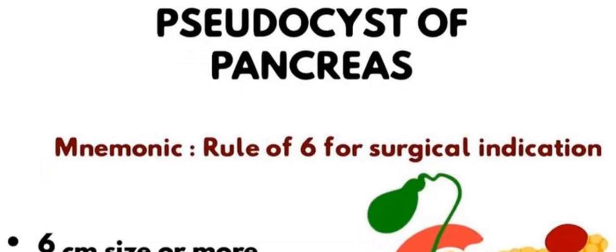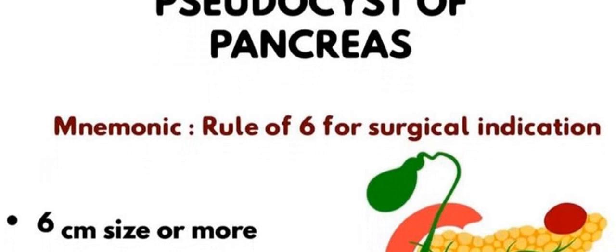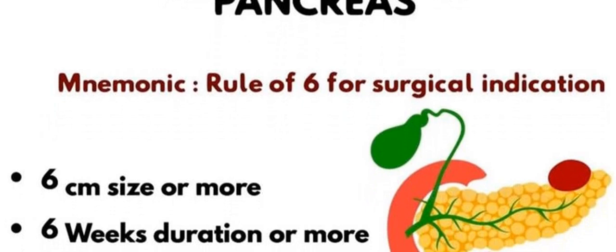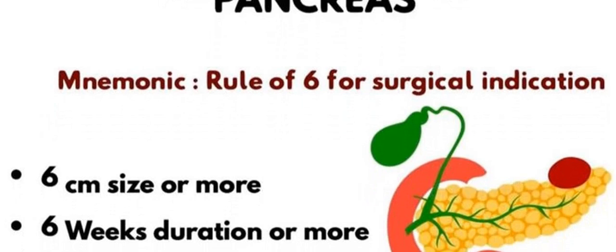The first indication is size — if the pseudocyst of the pancreas is six centimeters or greater than six centimeters, this is the first surgical indication for pancreatic pseudocyst.